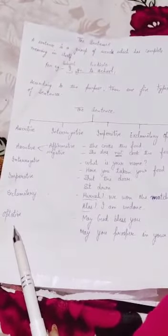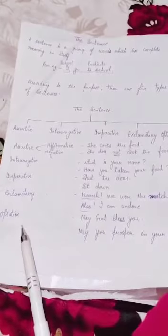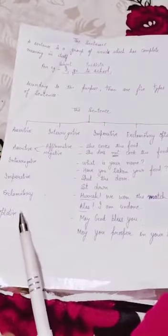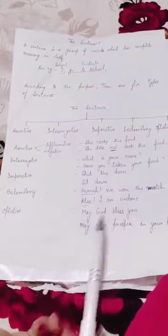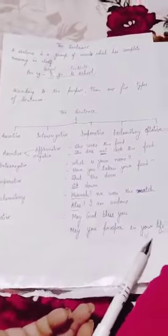The last kind of sentence is optative sentence. These sentences are used to express a wish, a prayer or a curse. For example, may God bless you. May you prosper in your life.